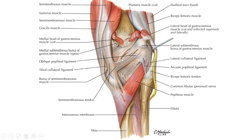Here is another view of the capsule showing the deficiency posterolaterally, from where the popliteus muscle emerges. You can also see the lateral collateral ligament and medial collateral ligament.